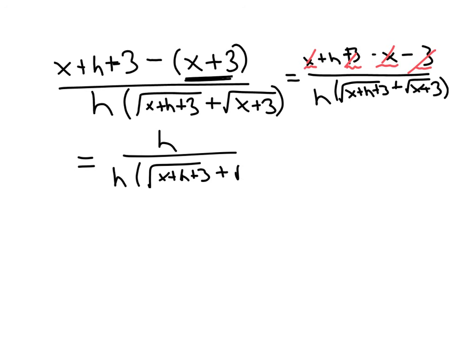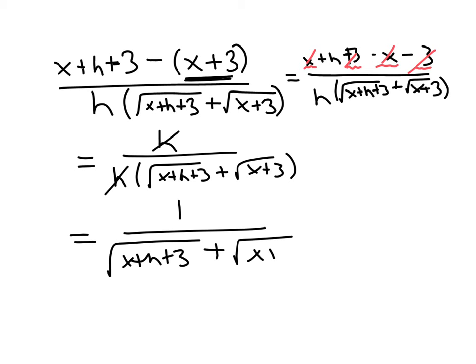And then plus the square root of x plus three. So the h's will cancel here. And then our final answer is one over the square root of x plus h plus three, plus the square root of x plus three. Notice now, if we were a calculus student, when we wanted to substitute zero for h, we could do that now. And this thing will be defined, not undefined.